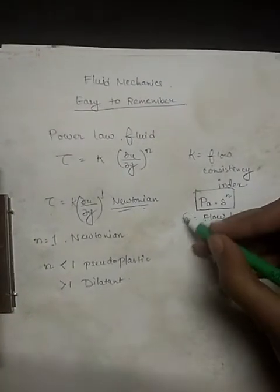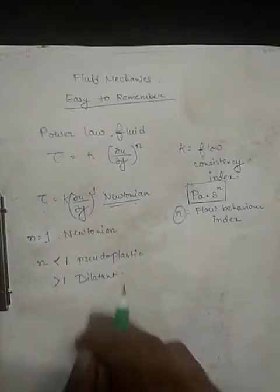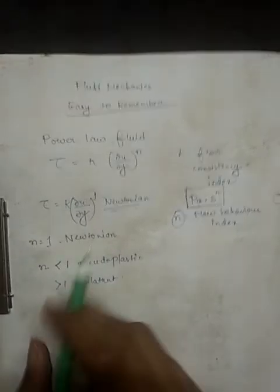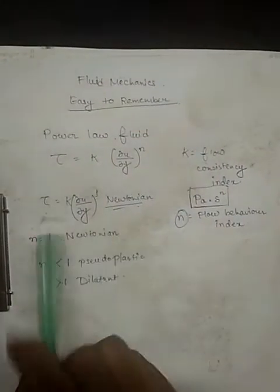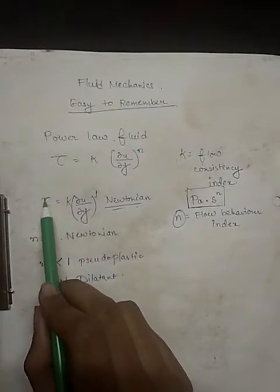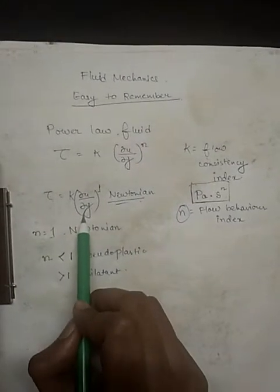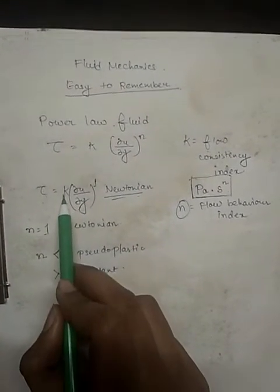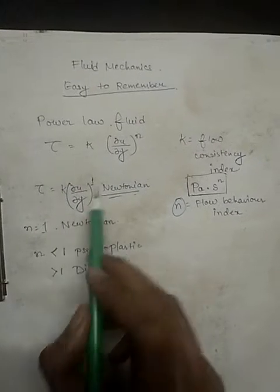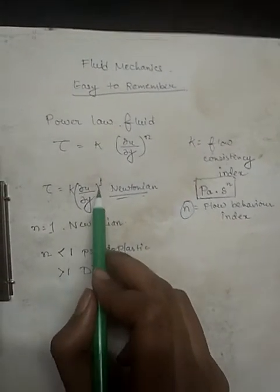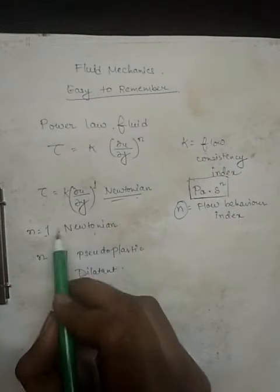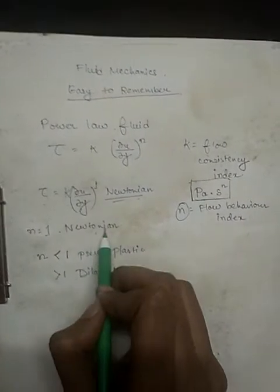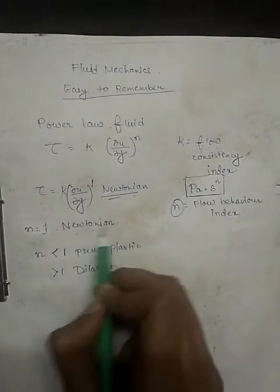So basically your n is the determining factor for what kind of fluid you are dealing with. Now from Newton's law of viscosity, you know that tau is directly proportional to del u del y, say our proportionality constant is k. So del u del y necessarily has the power of 1. So when n equals to 1, the kind of fluid we are dealing with is Newtonian.